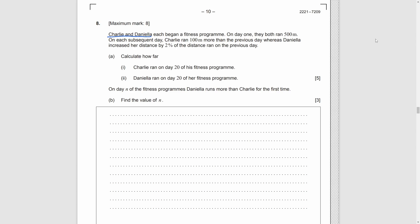Question 8. There are two people. In the first day, they both run 500 meters. On each subsequent day, C runs 100 meters more than the previous day. So, it forms an arithmetic sequence. And for D, she runs 2% of the distance more than the previous day. So, it forms a geometric sequence. Part A, we need to find the total distance C and D went on day 20. For C, by the formula of AS, we have UN equals U1 plus N minus 1 times the difference. By substitution, we have 500 plus 19 times 100, which is 2400. And for D, by the formula of GS, we have UN equals U1 times bracket 1 plus 2% to the power 19, which is 728.